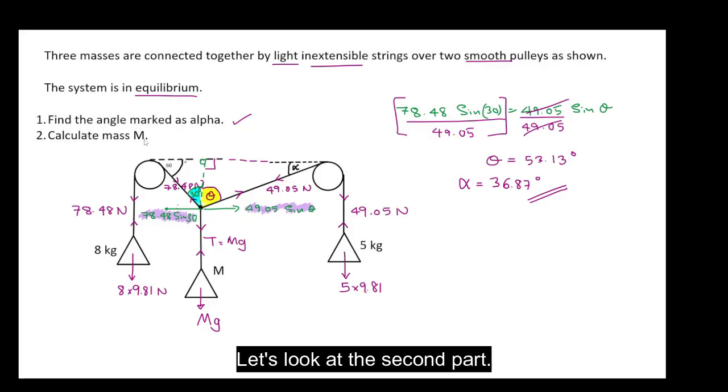Let's look at the second part. Calculate the mass m. Now we are going to consider the vertical equilibrium of the same point.